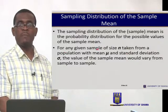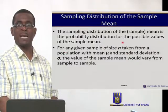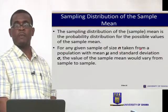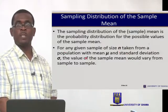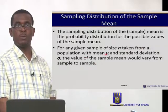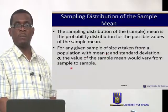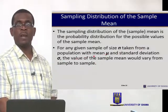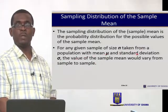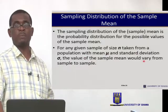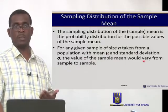The sampling distribution of the sample mean is simply the probability distribution for all the possible values of the sample mean — you list all possible values and their associated probabilities. For any given sample of size n taken from a population with mean mu and standard deviation sigma, the value of the sample mean will vary from sample to sample.